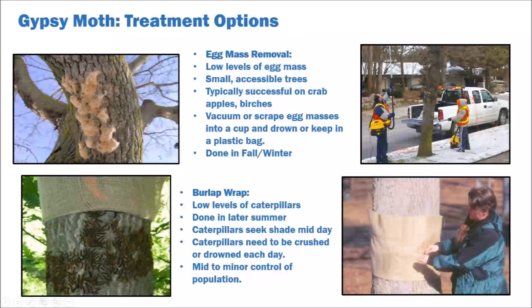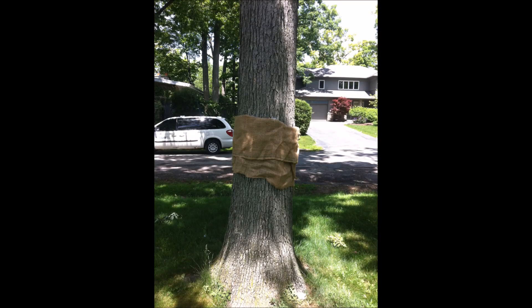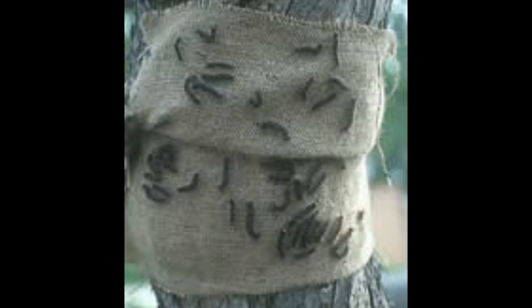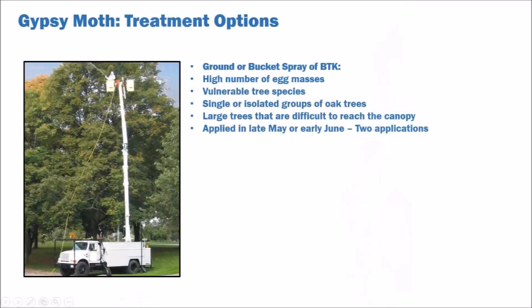Burlap wrapping in mid to late summer when caterpillars become larger is another simple way to eliminate a large number of caterpillars. Caterpillars will seek shade in the heat of midday and find shelter in the folds of the burlap skirt. Burlap needs to be removed while caterpillars are trapped and caterpillars must be destroyed — stomping, fire, and drowning are all common options. As infestation levels grow, spraying of pesticides becomes a more efficient option.